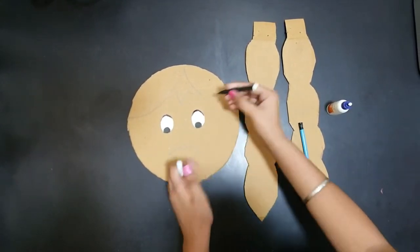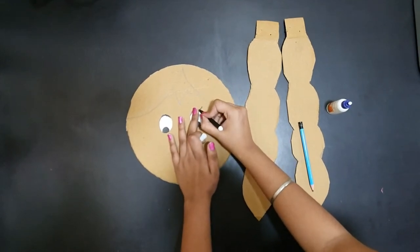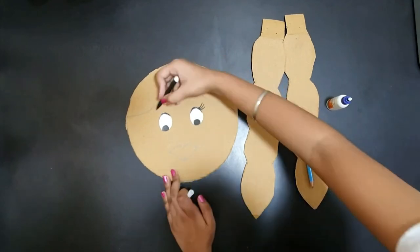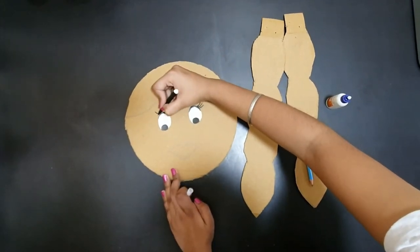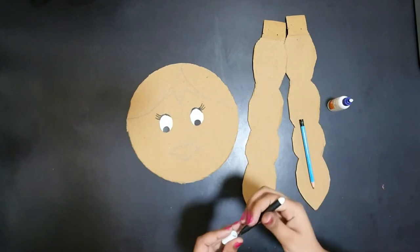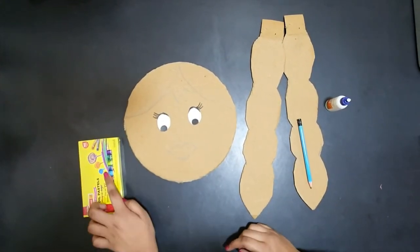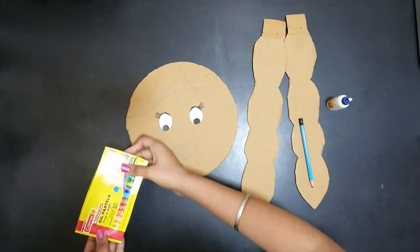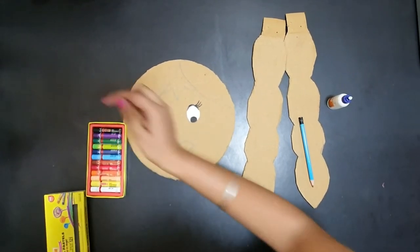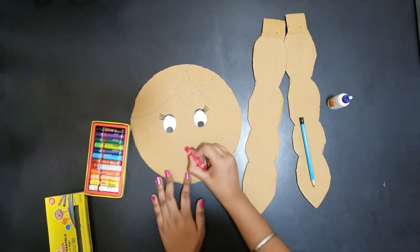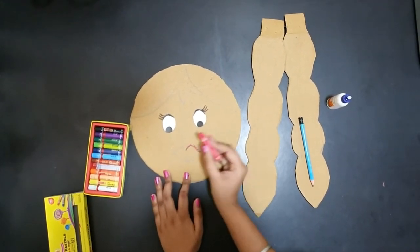We will make the hair. Now, with a colored sheet, we will do the face. Here we will place the face. We will make eyelashes. Now we will take colors and for lips we will do any of our favorite colors.